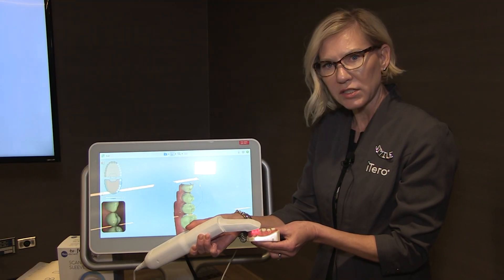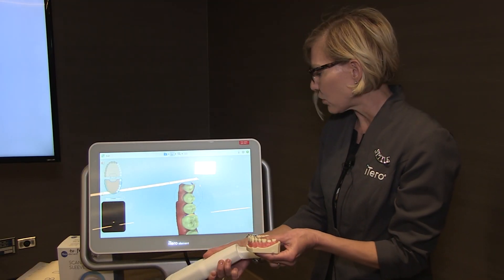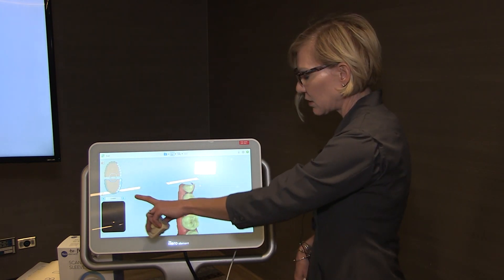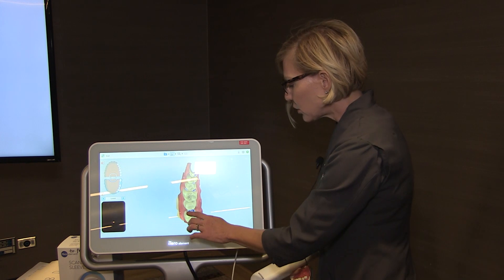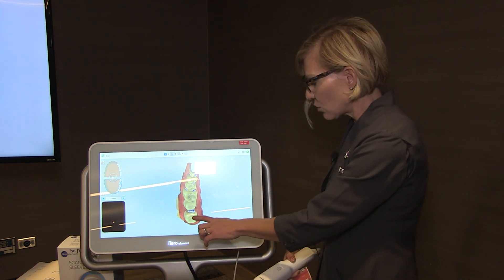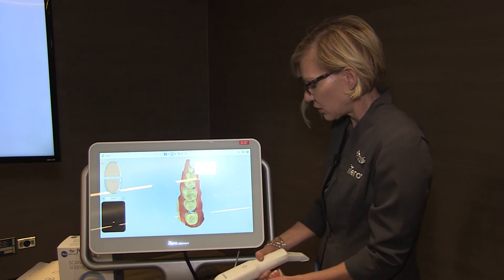Being sure to capture the contacts at this point. I don't capture the contacts when I'm scanning the prep, but I capture them as part of the prep segment. Now I do have some voids here on my distal contacts. So that's my contact on my adjacent tooth.